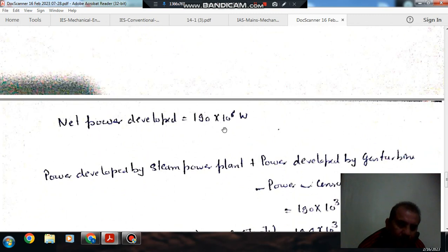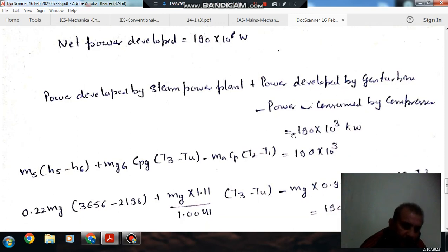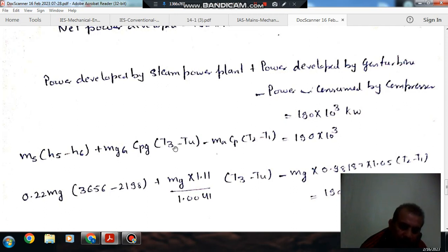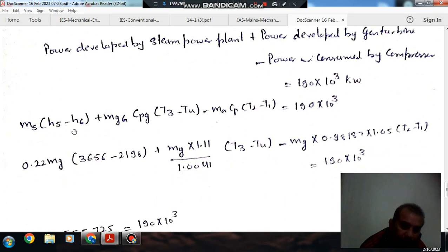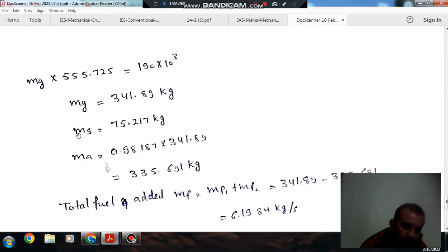So now the power output is 190 × 10^6 W and net power output is power by steam turbine plant plus power by gas turbine minus power consumed by compressor. Power output by steam turbine plant is Ms(H5 - H6) and power output in gas turbine is Mgg·Cp·(T3 - T4). Power consumption in compressor is Ma·Cp·(T2 - T1). So we can find out Mg and then Ms and then Ma.